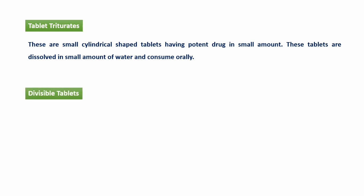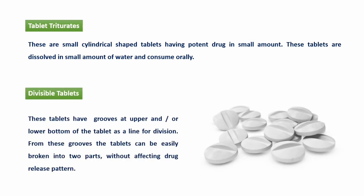Now we move to the classification based on tablet structure. Divisible tablets — इन tablets के upper या bottom surface पर एक groove बना होता है, यानि एक हल्की सी गहरी line जो tablet को दो equal parts में divide करती है। जब tablet को break करके दो equal parts में तोड़ना होता है तो यह groove help करता है।